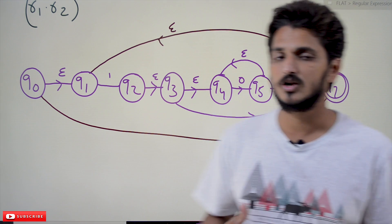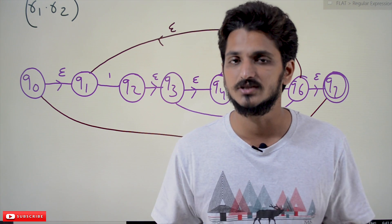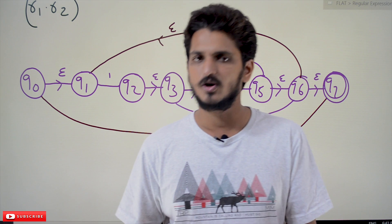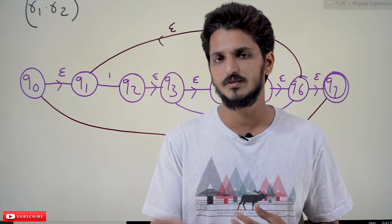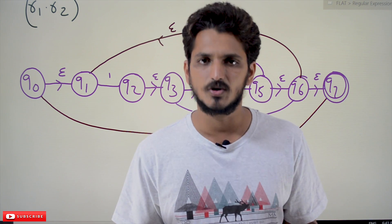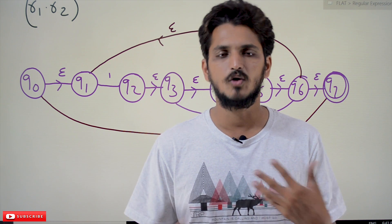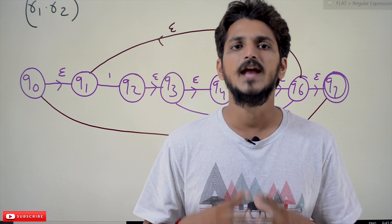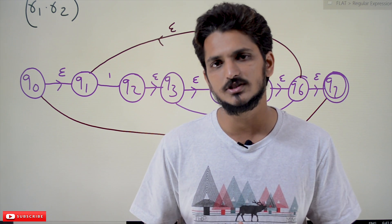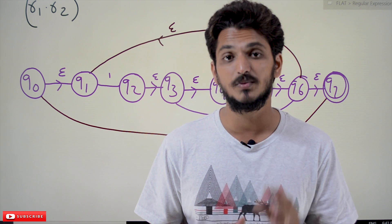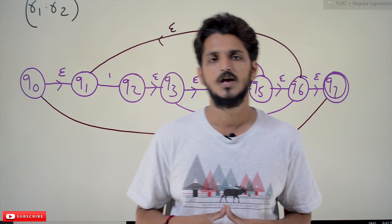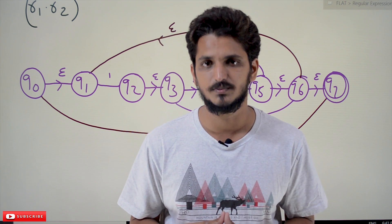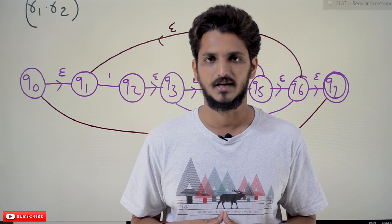This is how we can write the finite automata for any regular expression. Whatever regular expression you take, it will involve either a union (plus) operator, a concatenation operator, or a closure operator, and we know how to combine all of those. Hope you understand the concept. If you have any questions, please post them in the comment section below. Thanks for watching — if you haven't subscribed to our channel, please subscribe and press the bell icon for the latest updates. Thank you.